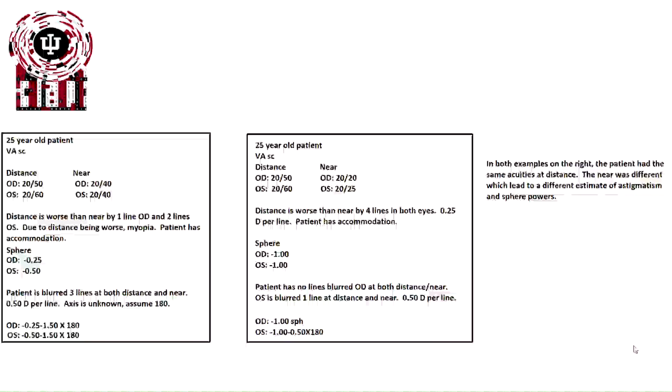The patient has blurred three lines at both distance and near at half diopter per line. We don't know the axis, so we can assume 180 in this situation, but because there's three lines reduced at a half diopter, we expect one and a half diopters of astigmatism. Our final estimated prescription, right eye minus 0.25 minus 1.50 at 180, left eye minus 0.50 minus 1.50 at 180.